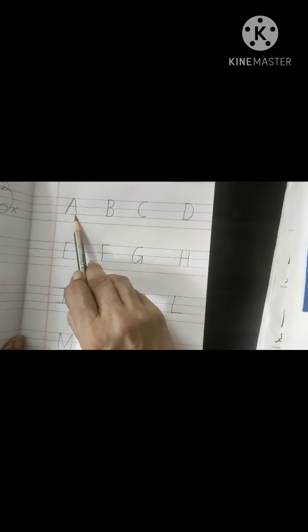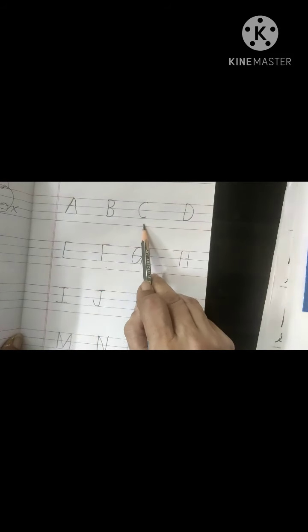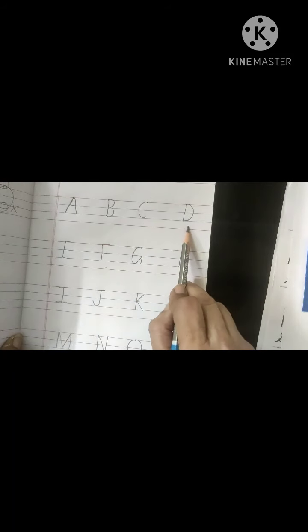You know: A says A, B says B, C says Q, D says D, E says A, F says F, G says G, H says H.